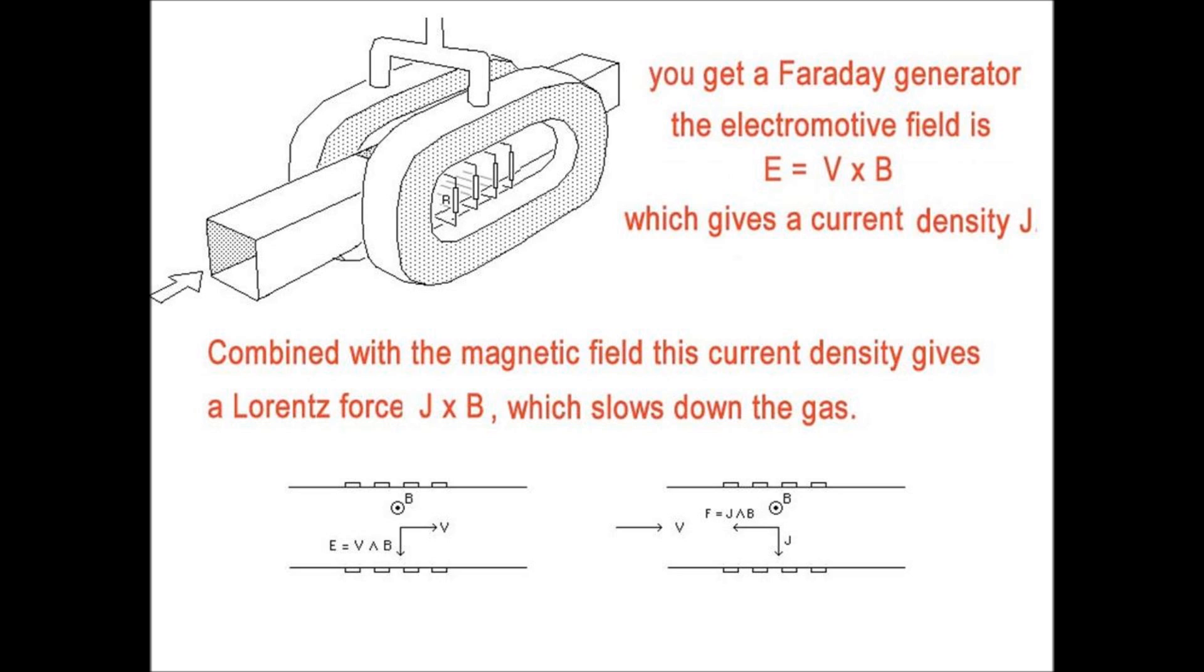Below, you can see the induced electric field, v cross B. This electric field produced electric current, J, being the current density per square meter. And this current density creates a volume force, J cross B, that slows down the fluid.